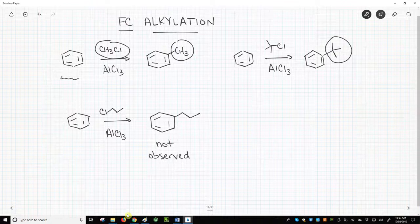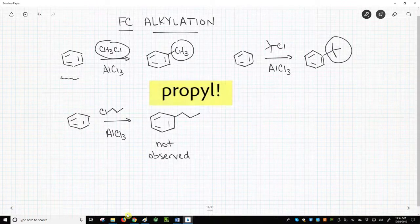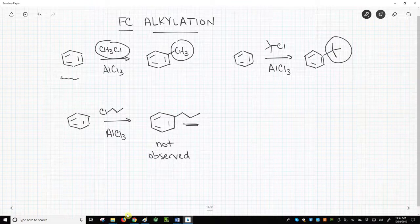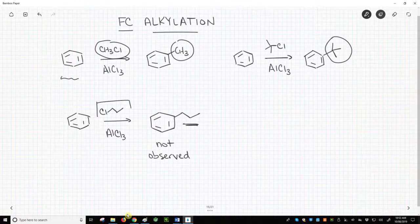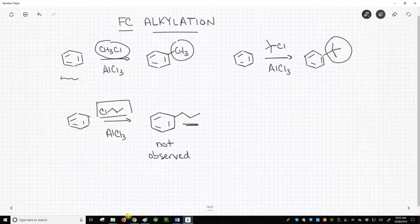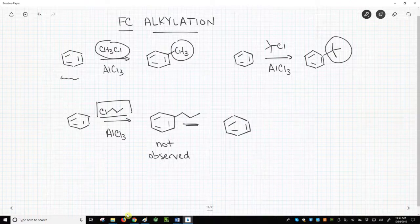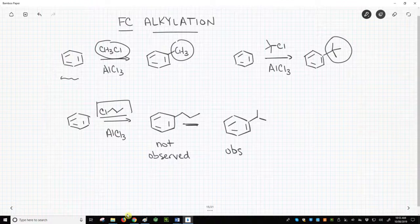At the bottom, we have something that looks like it should work. We want an isopropyl group on the ring, so use propyl chloride. Perhaps surprisingly, this reaction does not give the expected product. What we do observe is isopropylbenzene. Weird. What happened?